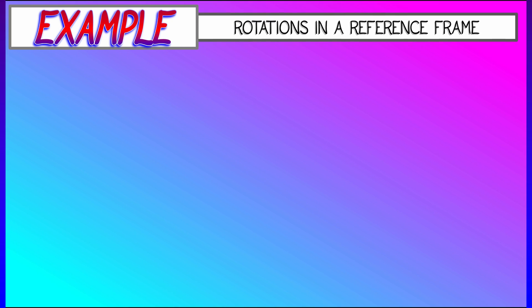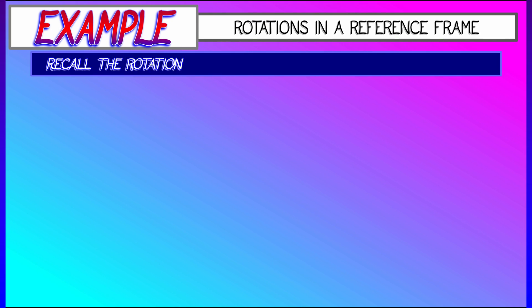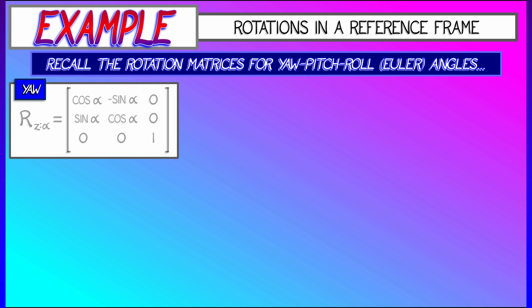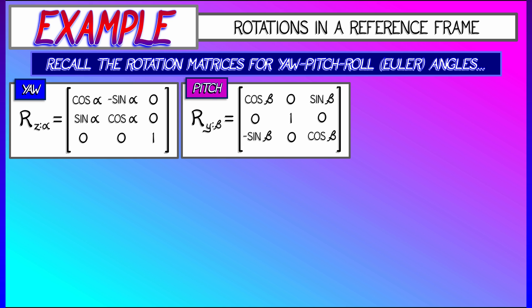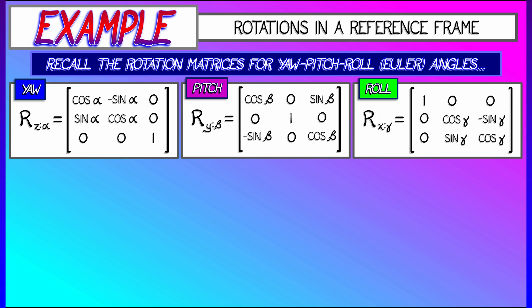Let's think about an example that we looked at earlier, namely rotations. But let's think about it now in terms of matrices and linear transformations. Recall the three rotation matrices in 3D for yaw, pitch, and roll, or rotation about the z-axis by an angle alpha, rotation about the y-axis by an angle beta, and rotation about the x-axis by an angle gamma.